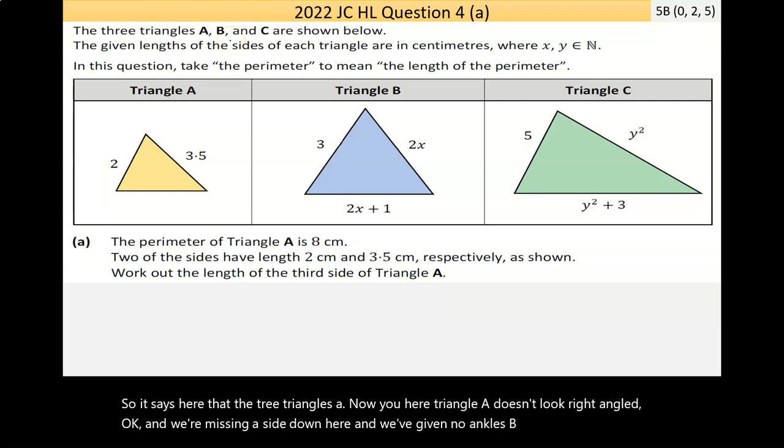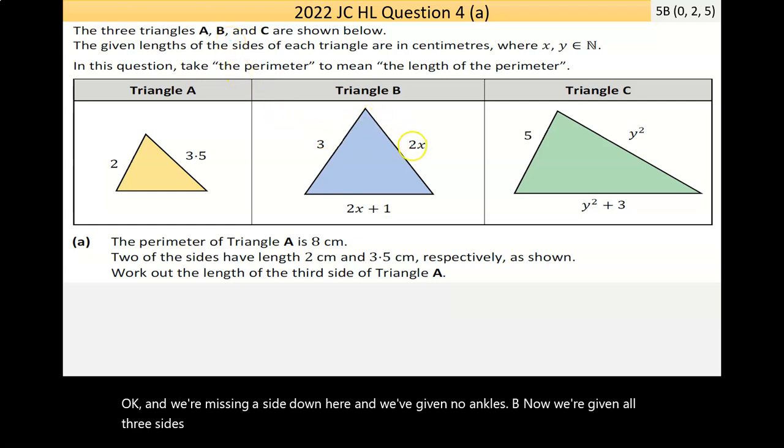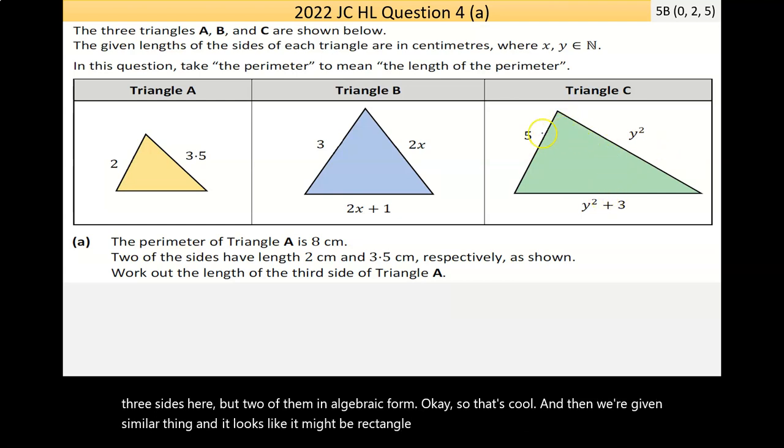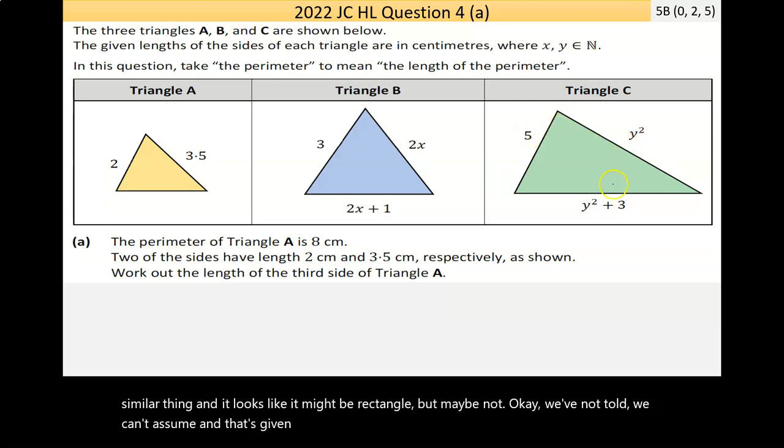B, now we're given all three sides here, but two of them in algebraic form. That's cool. And then C, we're given a similar thing. Now it looks like it might be right angled, but maybe not. We're not told, we can't assume. And that's given in algebraic form as well, but using a different variable.